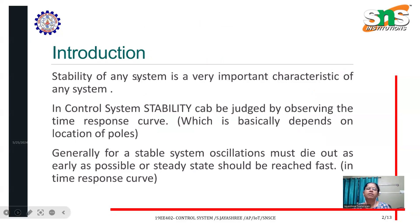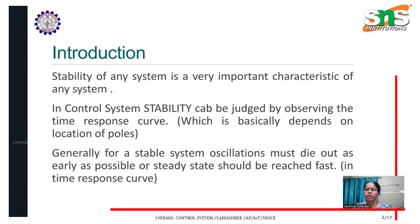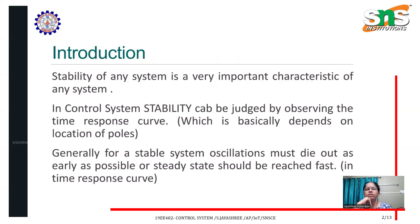What is stability? Stability of any system is a very important characteristic. In a control system, stability can be judged by observing the time response curve — how the system behaves with respect to time: at zeroth time, at one hour, second hour, third hour. From the time response characteristics, we can observe the stability of the system.